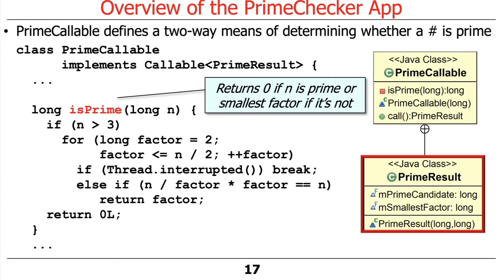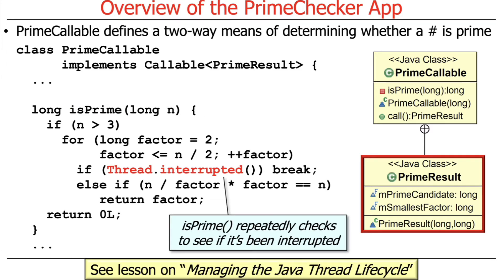Here's the isPrime checker method. It returns zero if the parameter n is prime, or the smallest factor if it's not prime. The key thing is that every time through the loop, we check to see if the thread has been interrupted, and if so, we break out of the loop. This allows us to interrupt a long-running prime number computation — if it's a big N and it's prime, it can take a long time — making the program more responsive if you want to cancel it.